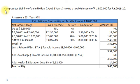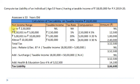Now we will solve another example. Compute tax liability of an individual aged 53 years having a taxable income of Rs. 18 lakh for previous year 2019-20. The assessee is 53 years old – individual resident. Basic exemption limit: Rs. 2,50,000 – no tax up to this. Second stage: Rs. 2,50,001 to Rs. 5 lakh; taxable income Rs. 2,50,000 at 5% = Rs. 12,500.